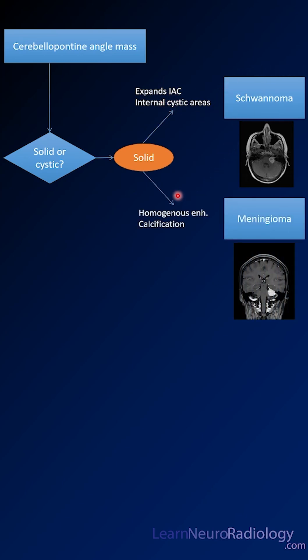If it's more homogeneous enhancement, it might be calcified, and it's centered outside the internal auditory canal — it's probably a meningioma.